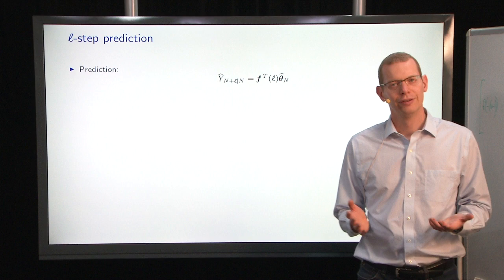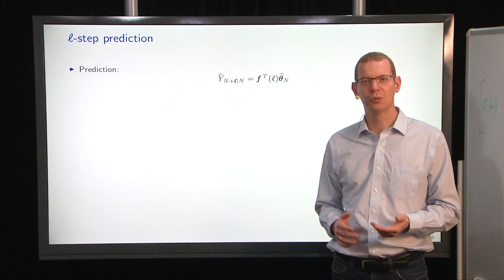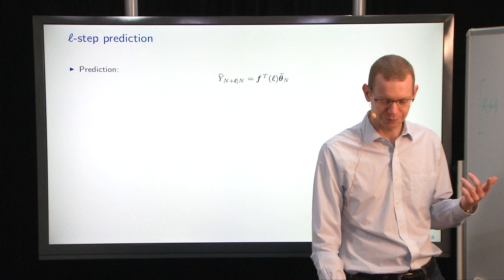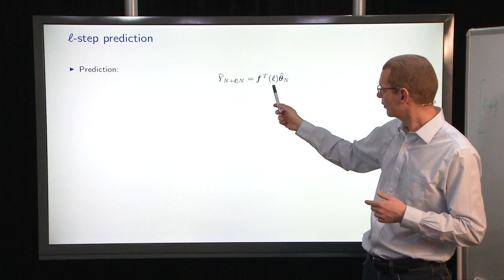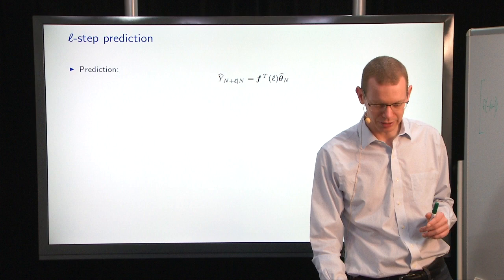So then we have a solution. The prediction here is very similar to what we did in the linear regression model last week. The prediction is easy. You just take the F of l corresponding to the time you want to predict, and the most recent estimated theta hat at time n.